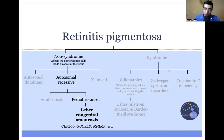Here is a schematic for thinking about retinitis pigmentosa. First, consider non-syndromic versus syndromic causes of RP. Non-syndromic causes, like LCA, do not have any involvement outside of the retina or eye itself. Syndromic causes have multiple organ involvement outside of the eye. One example of syndromic causes are the ciliopathies, which include Usher syndrome — presenting with hearing loss and balance issues — as well as Bardet-Biedl syndrome.